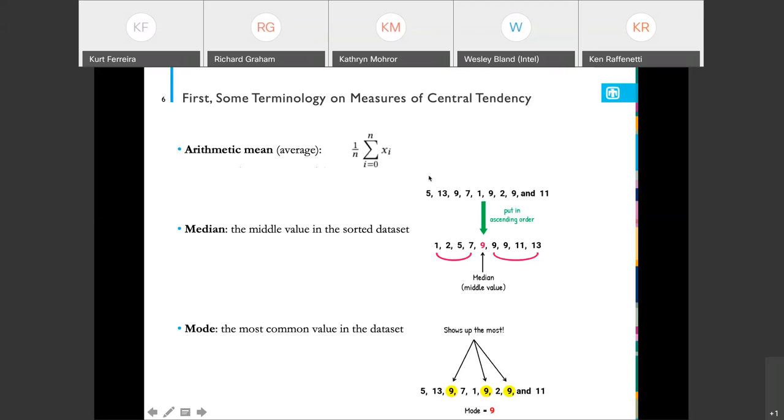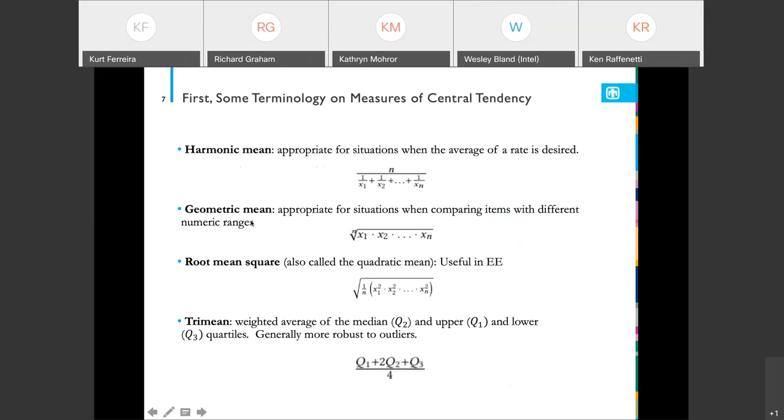The mode is the most common value in the data set. So again, in the cartoon, we see the mode is nine. It's the one that occurs most frequently.